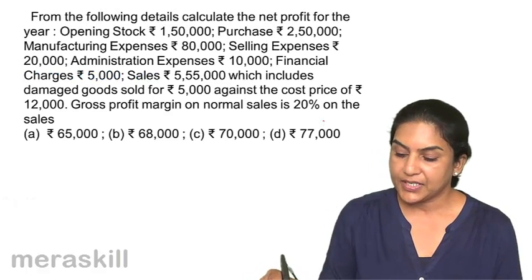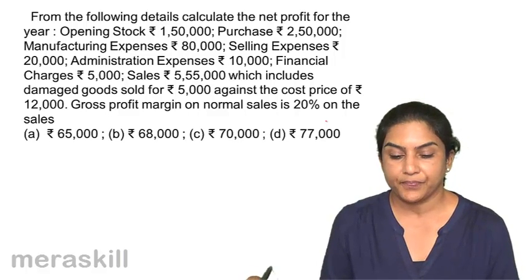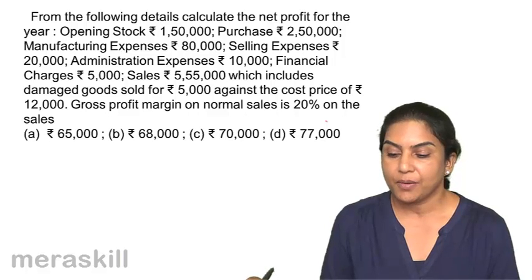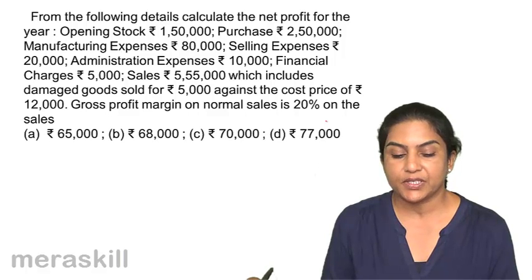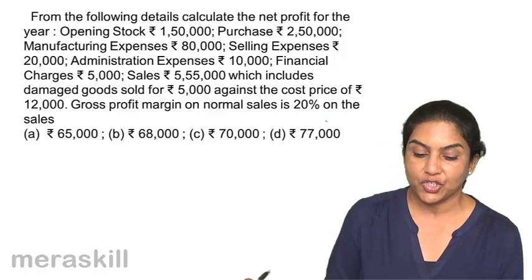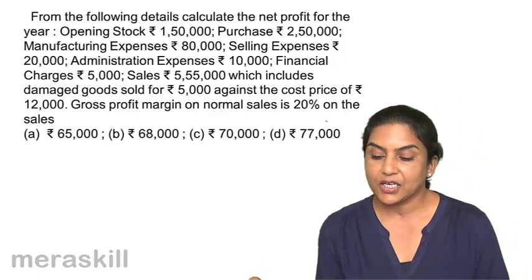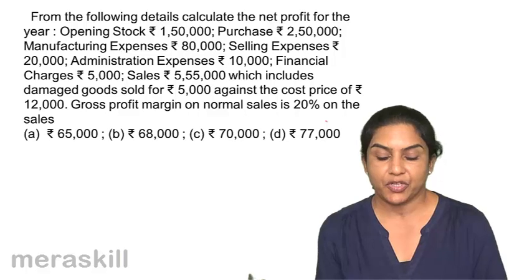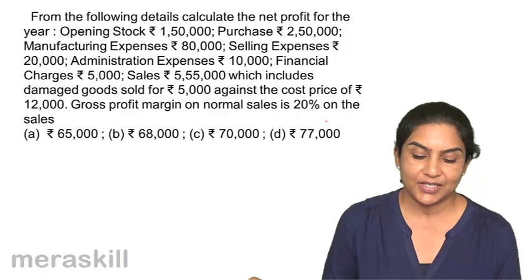From the following details, calculate the net profit for the year: opening stock 1,50,000; purchases 2,50,000; manufacturing expenses 80,000; selling expenses 20,000; administration expenses 10,000; financial charges 5,000; sales 5,55,000 which includes damaged goods sold for 5,000 against the cost price of 12,000. Gross profit margin on normal sales is 20% on sales.